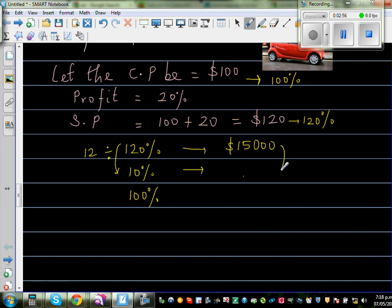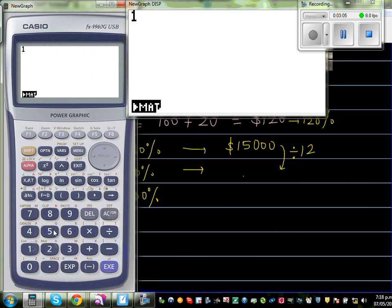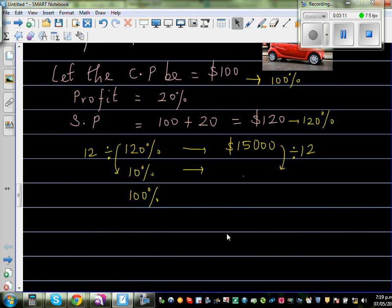So to get this number, you do the same thing. So 15,000 divided by 12. Let us get the calculators out, which is 15,000 divided by 12, which is $1,250.